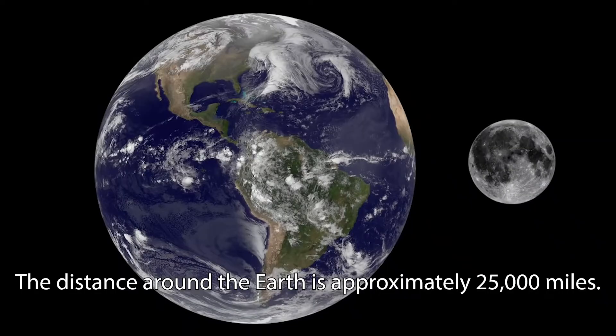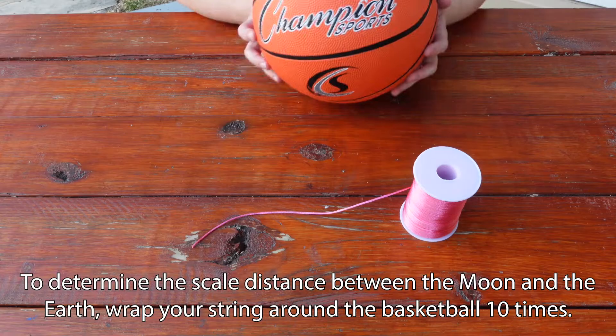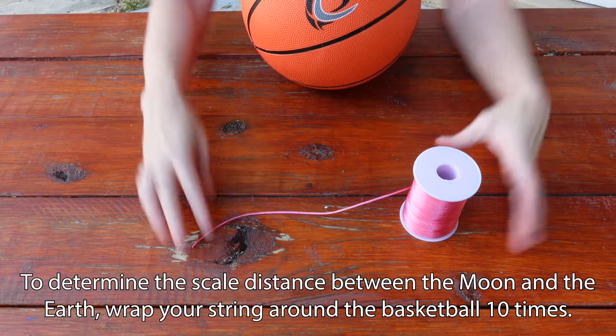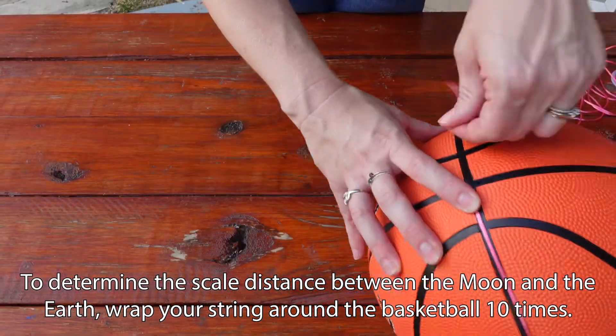The distance around the Earth is approximately 25,000 miles. The distance to the Moon is 10 times the distance around the Earth. To determine the scale distance between the Moon and the Earth, wrap your string around the basketball 10 times.